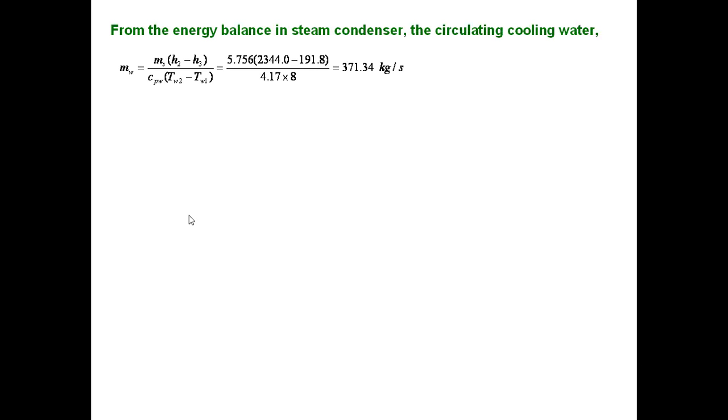To find the irreversibility loss associated in the condenser, first of all, we need to determine how much amount of circulating water is required in the condenser. From the heat balance in the condenser, Ms·(H2 minus H3) equals Mw·Cpw·(Tw2 minus Tw1).